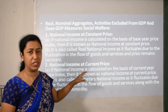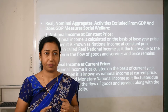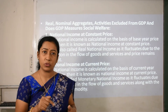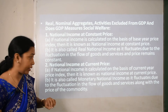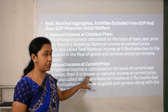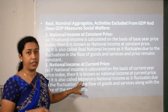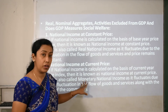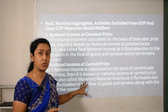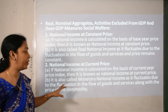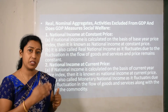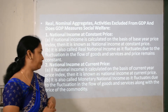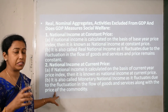National income at current price means we take the current year — for example, 2020. If national income is calculated on the basis of the current year price index, it is known as national income at current price, also called monetary national income. It fluctuates due to the fluctuation in the flow and production of goods and services along with the prices of those commodities.